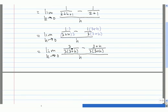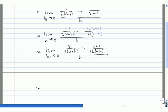Now that we have a common denominator among the terms in the numerator, we write it as a single fraction. We get [3 - (3+h)] divided by 3(3+h). Don't forget the parentheses around 3+h. The overall fraction is still divided by h.